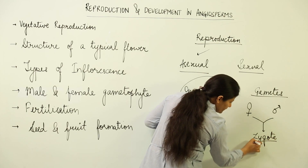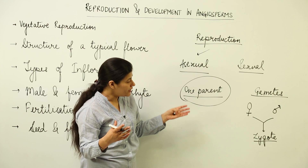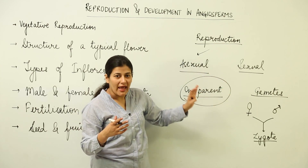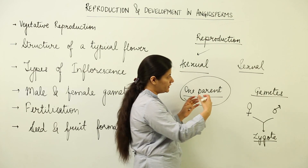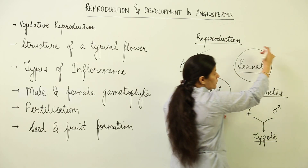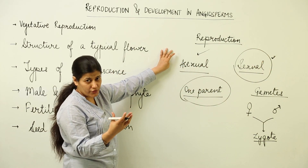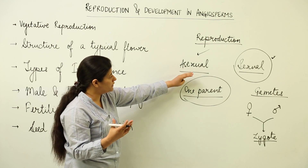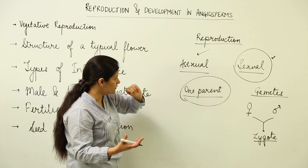These terms — gametes, fertilization, zygote — are not new; you must be familiar with them. Our main topic to be studied in great detail will be sexual reproduction, because we are dealing with flowering plants, and the flower is the site of sexual reproduction in angiosperms. We will have a little discussion about asexual reproduction in the lessons to follow, and a detailed study of sexual reproduction.